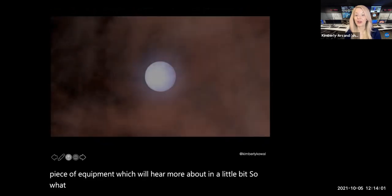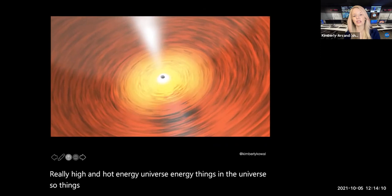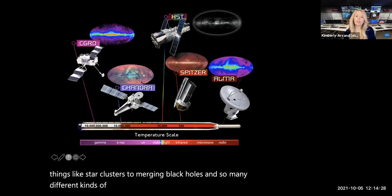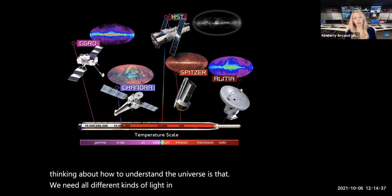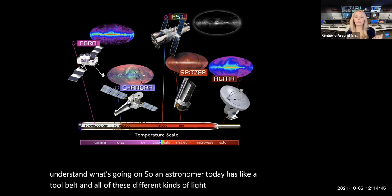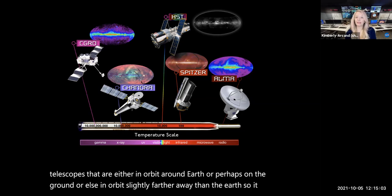And so on the video that we have on our screen now is just an animation of Chandra's orbit going about a third away to the Moon. Chandra is about the size of a school bus as well. And so there's a lot of really fascinating technological feats that had to happen to be able to create this piece of equipment, which we'll hear more about in a little bit. So what does Chandra get to look at all day? Well, Chandra gets to look at really high and hot energy things in the universe. So things like exploding stars, things like black holes, things like colliding galaxies, and ever so much more from young stars to things like star clusters to merging black holes and so many different kinds of objects.